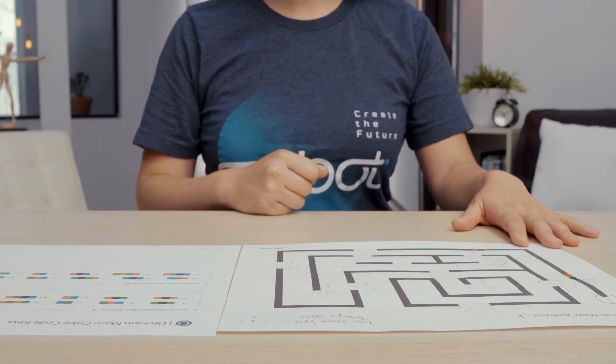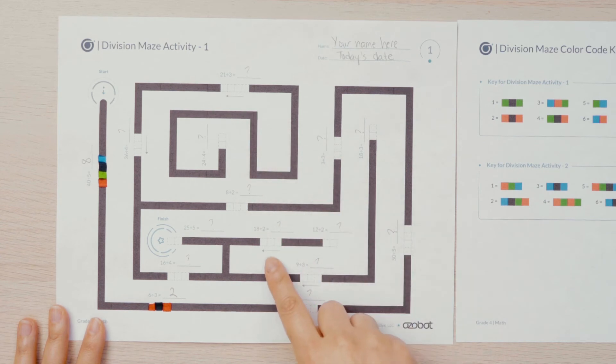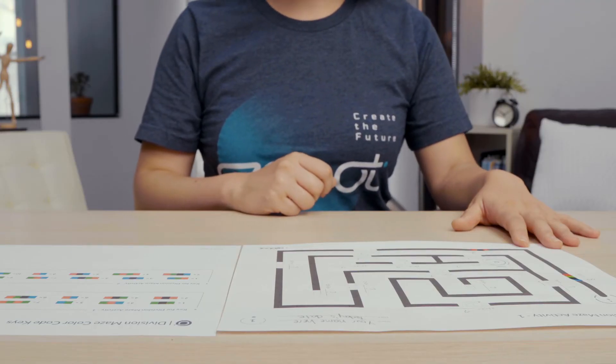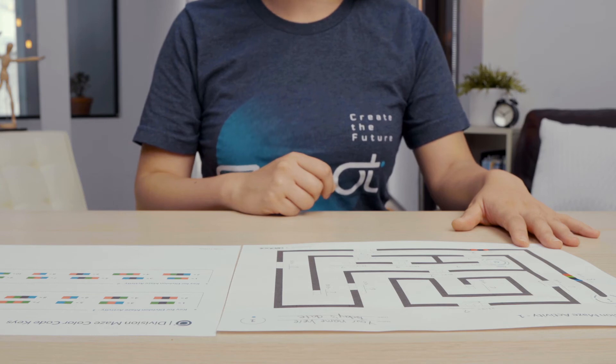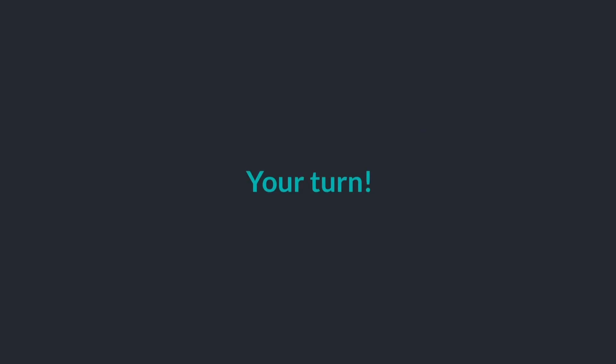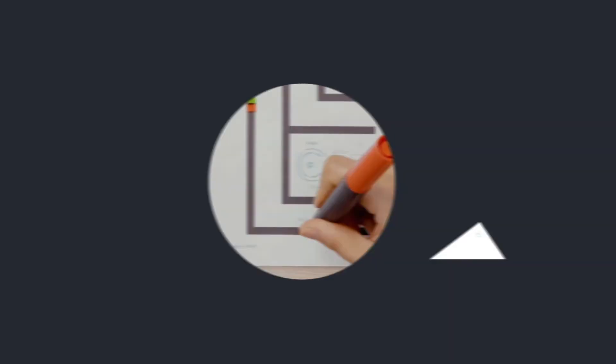As you're filling in the color codes for the rest of the division facts, some of the codes have an arrow to show which direction the bot will be traveling when reading the code. Be sure to fill in the colors in the correct direction because these are asymmetrical codes. Can you fill in the rest of the color codes using the key?